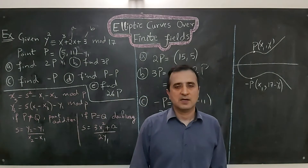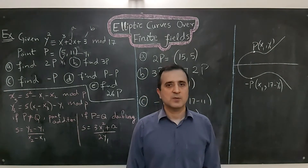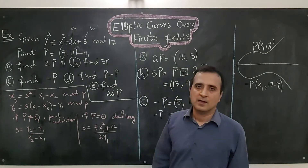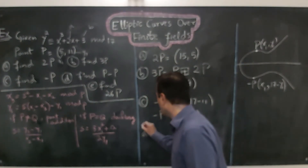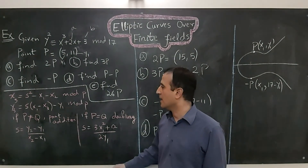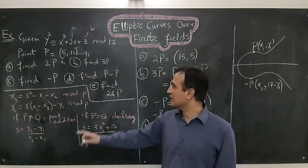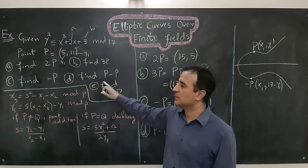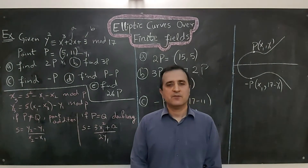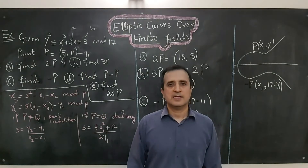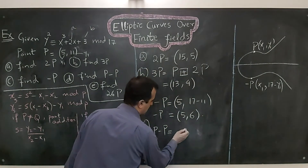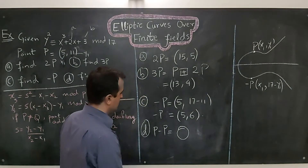Now let's do part (d): calculate P minus P. We cannot use point doubling or point addition here. There is a special rule: P minus P equals the identity element — the special imaginary element defined earlier that lies at positive or negative infinity. So the answer to part (d) is the identity element.